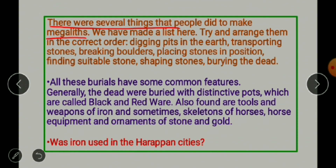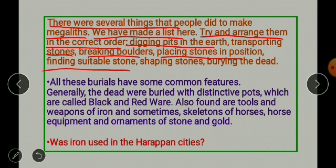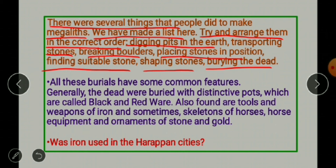There were several things that people did to make megaliths. Try to arrange them in the correct order: finding suitable stones, shaping stones, digging pits in the earth, transporting stones, breaking boulders, burying the dead body, and placing stones in position. So first people found suitable stones, shaped them, dug the pits, transported and broke boulders, buried the bodies, and placed the stones.